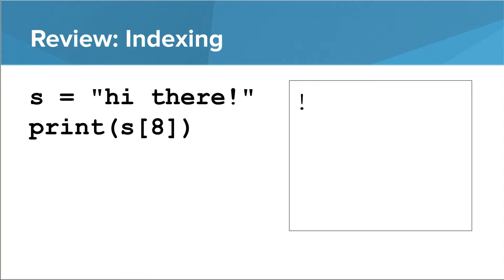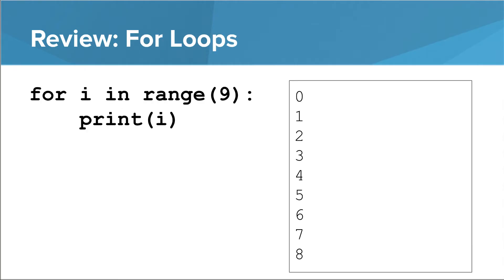Remember, the maximum possible index in a string is one less than the length. In this case, 8 is the highest index we could use. Also, remember that the number in range in a for loop is one more than the highest number that it will reach.